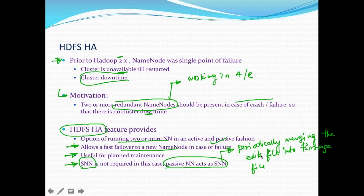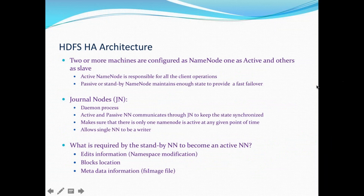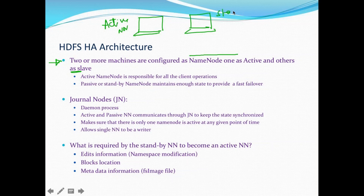We want periodic merging of edits into FSImage so that the next time the cluster restarts, it does not take too long and does not stay in safe mode for a long time. Architecture-wise, two or more machines are configured — one as active, one as standby — with the two name nodes running on two different machines. The active name node is responsible for all client operations, and the standby name node maintains enough state to provide a fast takeover.